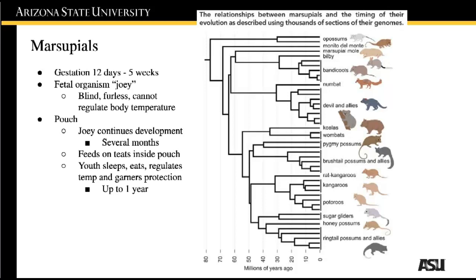Marsupials have an incredibly fast gestation. It lasts between 12 days and 5 weeks depending on the organism. So when they are born, they are very undeveloped. The fetal organism, which is called a joey, is blind, furless, and cannot regulate its own body temperature. So it crawls into the pouch of the mother. The pouch allows the joey to continue development for several months. In the pouch, it feeds on the teat and gets its milk from the mother.